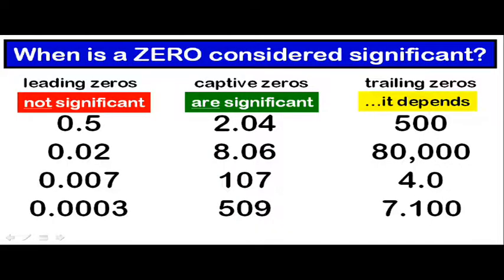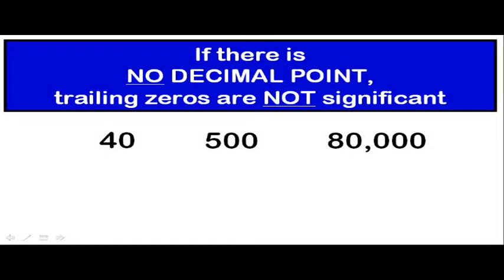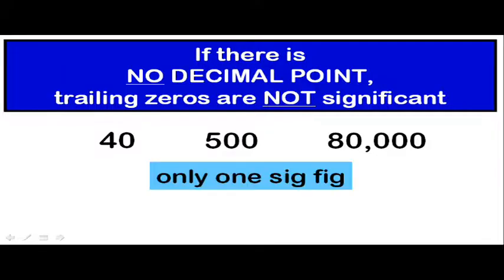Now trailing zeros, it depends. It depends on whether or not a decimal is present or absent, and we'll take a look at both examples. When there is no decimal point, the trailing zeros are not considered significant. So a measurement of 40, 500, or 80,000, all of these measurements would have only one sig fig. If you were to write 80,000 in scientific notation, it would still only have one sig fig, written as 8 times 10 to the fourth power.